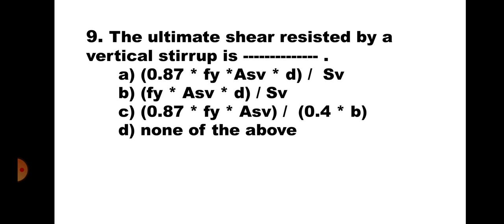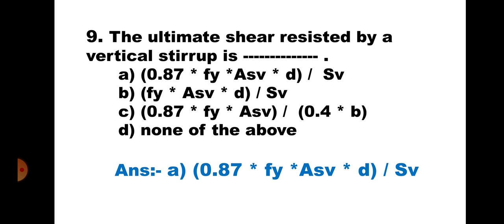Question 9. The ultimate shear resisted by a vertical stirrup is: A. 0.87Fy×ASV×D / SV, B. Fy×ASV×D / SV, C. 0.87Fy×ASV / 0.4B, and D. None of the above. The ultimate shear resisted by a vertical stirrup is given by 0.87Fy×ASV×D / SV. Hence, the correct answer is option A.